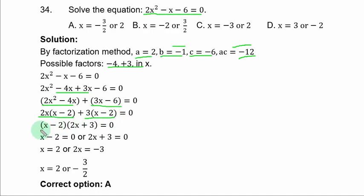x minus 2 is common. If you factor it out from the first group, 2x is remaining and plus 3 is left in the second group, which forms the other bracket and you equate it to 0. At this point, you equate each term to 0, that is x minus 2 equal to 0 or 2x plus 3 equal to 0.